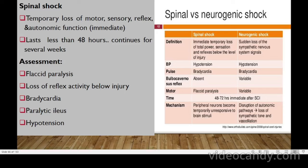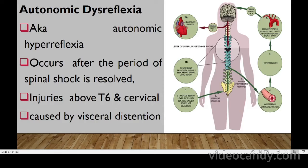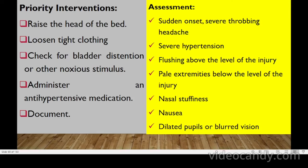Autonomic dysreflexia (also called autonomic hyperreflexia) occurs after spinal shock resolves and involves injuries above T6 and in the cervical region.